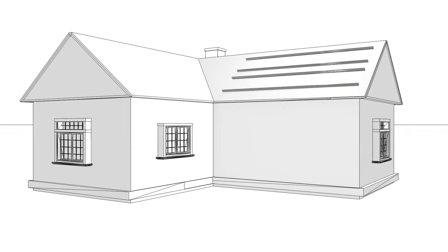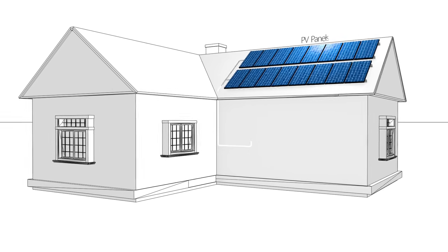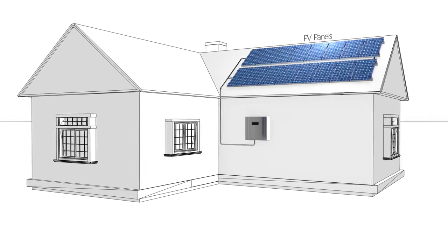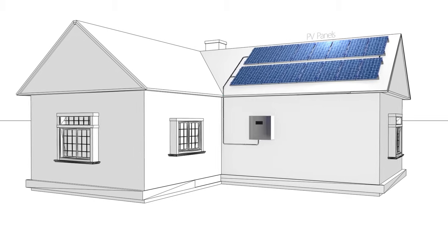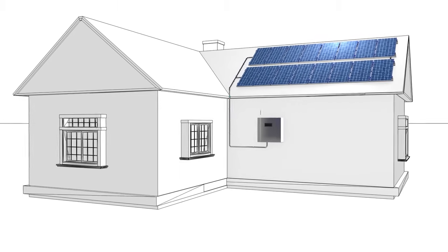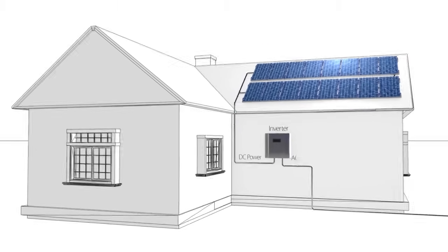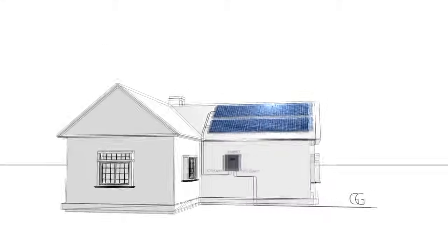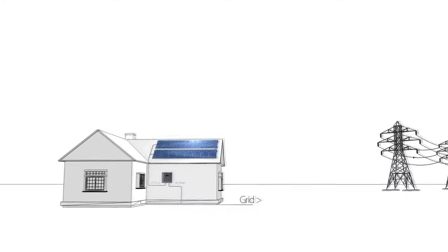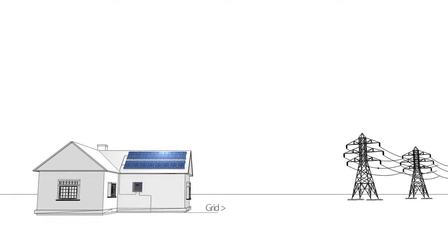A photovoltaic system consists of PV panels, which produce DC power when exposed to sunlight, and an inverter, which inverts the DC power into AC power that is fed into the utility grid.